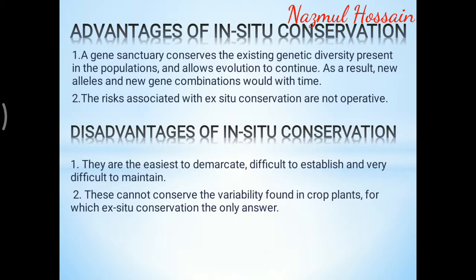Advantages of in-situ conservation: a gene sanctuary conserves the existing genetic diversity present in the populations and allows evolution to continue; as a result, new alleles and new gene combinations would develop over time. The risks associated with ex-situ conservation are not operative. Disadvantages of in-situ conservation: they are difficult to establish and very difficult to maintain. This approach cannot conserve the variability found in crop plants, for which ex-situ conservation is the only answer.